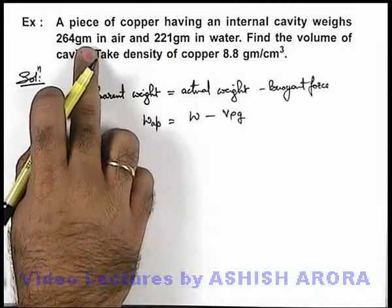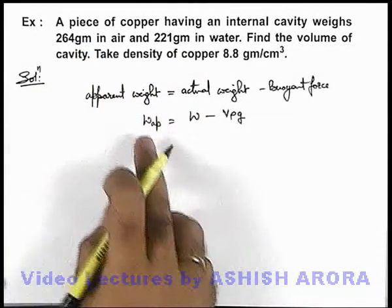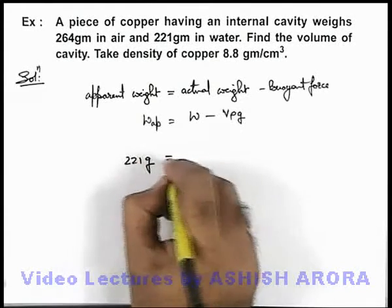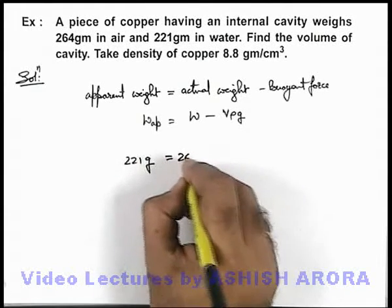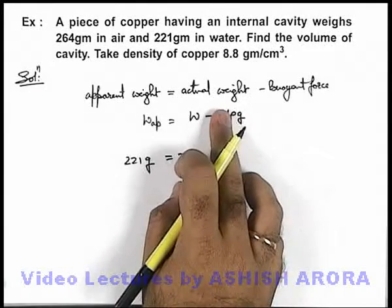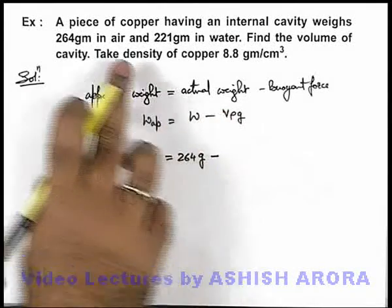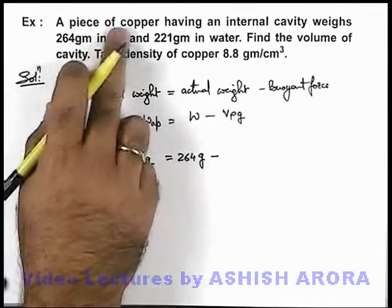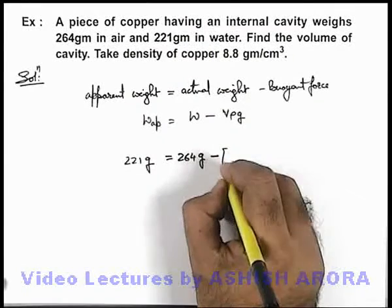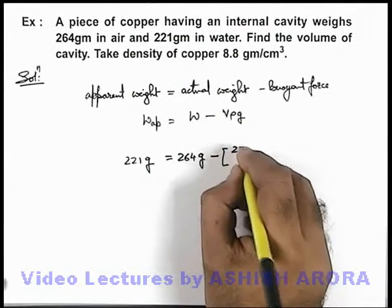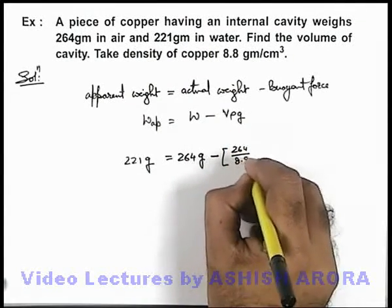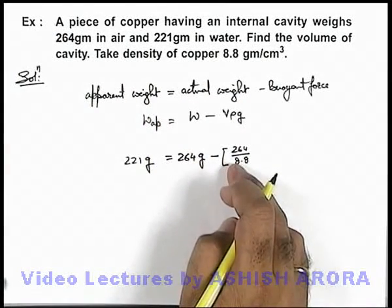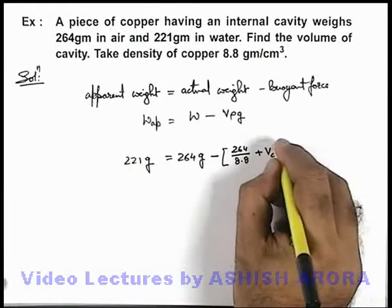The actual weight is 264 grams. So we can write: 221·g = 264·g minus the total volume, which consists of the volume of copper content (264 divided by 8.8, that is mass upon density) plus the volume of the cavity, multiplied by the density of water.